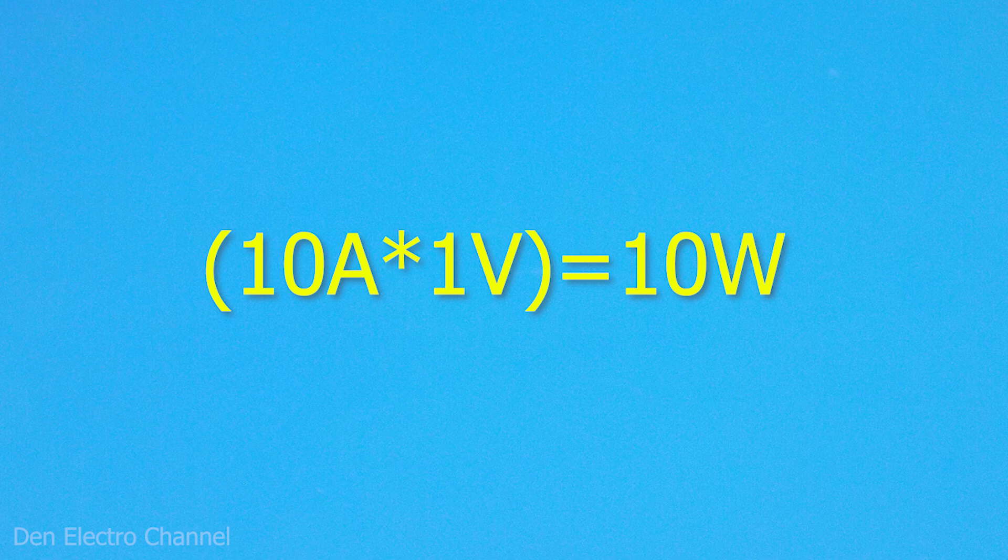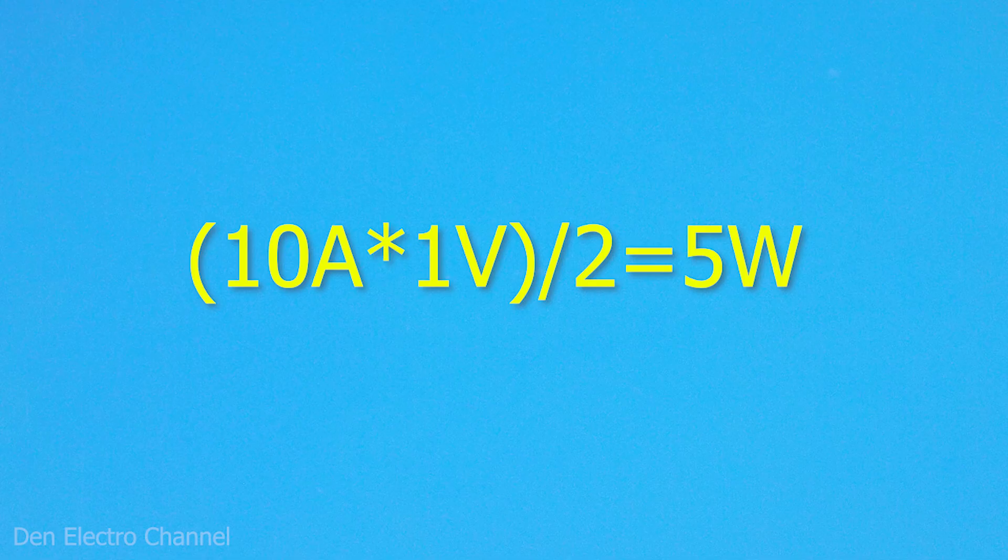But this is only on the condition that the current through it is constant. If we rectify alternating current in the form of a sine wave or square wave, then in the intervals between half periods, the diode will cool down. Therefore, the thermal power released on it will not be 10 watts but 2 times less.